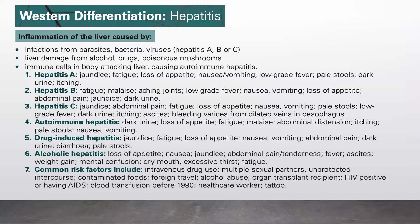Hepatitis is inflammation of the liver caused by infection from parasites, bacteria, or viruses — that's Hepatitis A, B, or C. It could also be due to liver damage from alcohol, drugs, or poisonous mushrooms. It could also be due to immune cells in the body attacking the liver, causing autoimmune hepatitis.